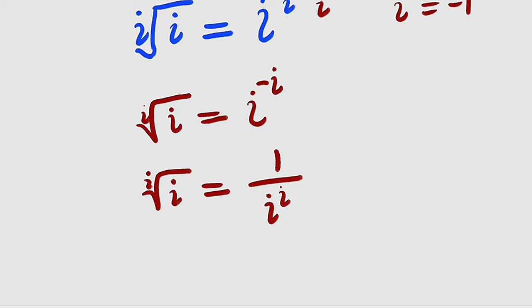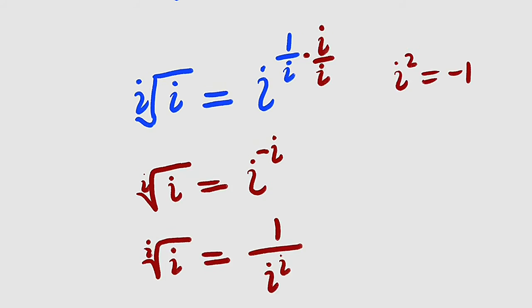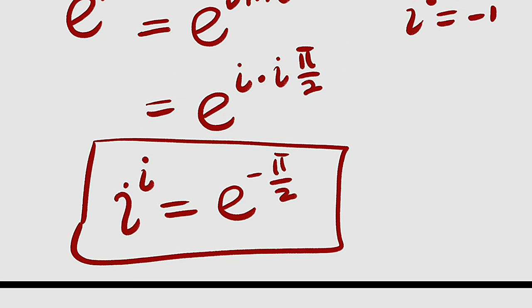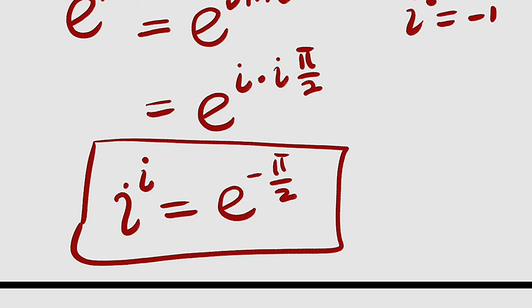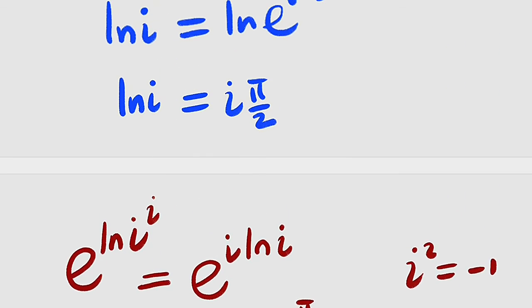But remember we have evaluated i to the power of i in one of our previous lessons. You can see that i to the power of i equals e to the negative pi divided by 2.